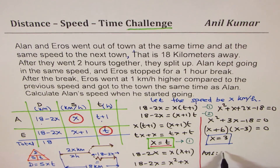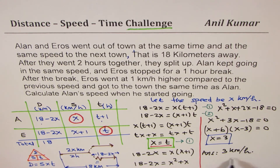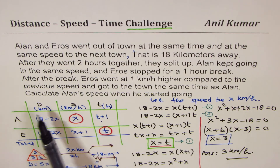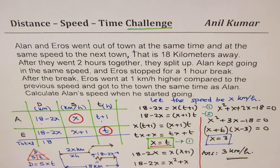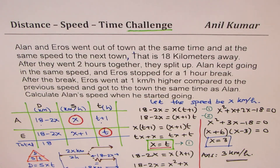So x is the speed at which they started — 3 kilometers per hour. The speed at which Ellen started is 3 kilometers per hour. I hope that makes sense. Feel free to write your comments and share your views. Thank you and all the best.